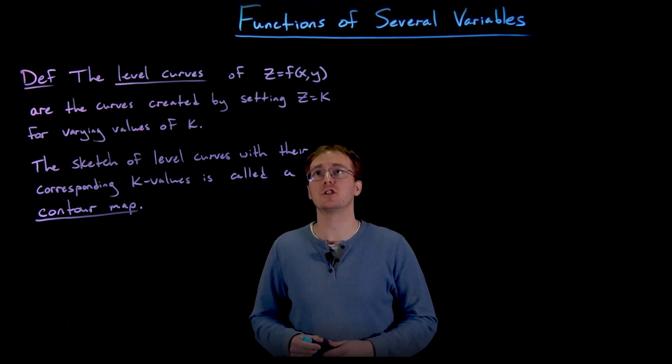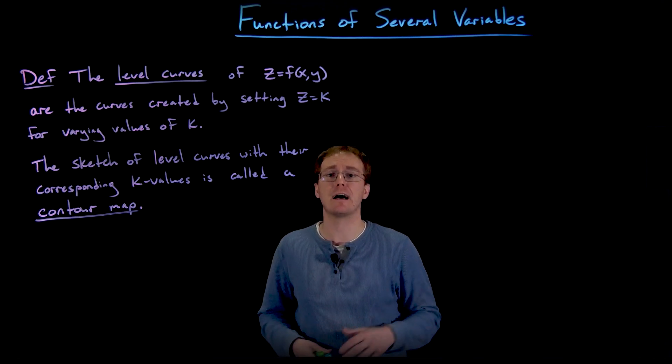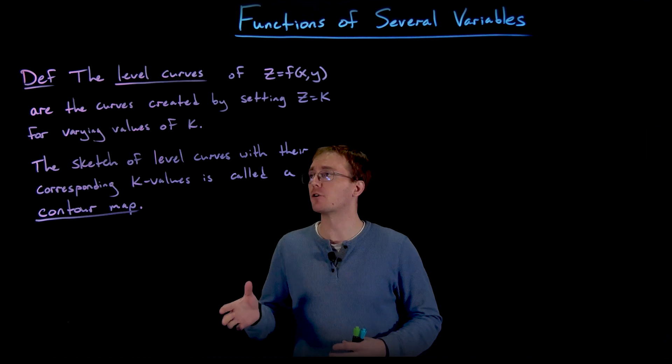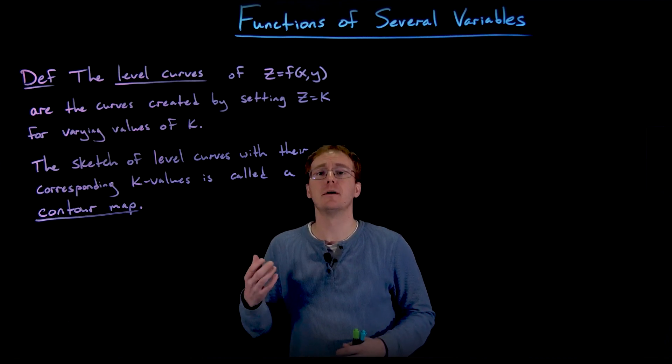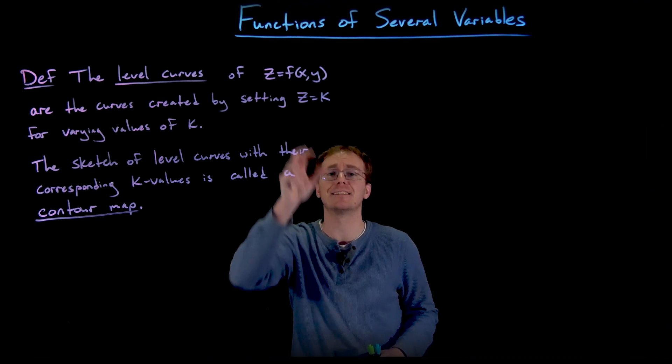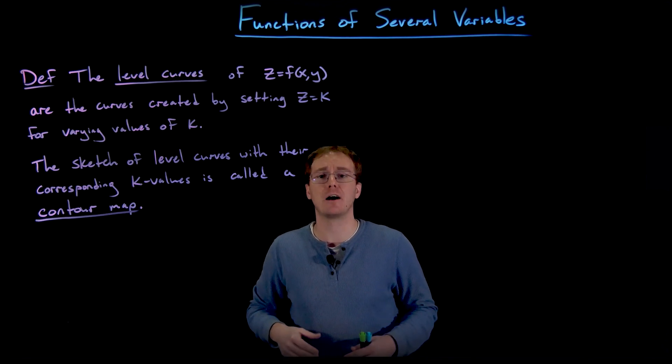So we say the level curve of a function of two variables like z = f(x,y), the level curves are the curves created by taking our output variable like z and setting it equal to some constant value like k.